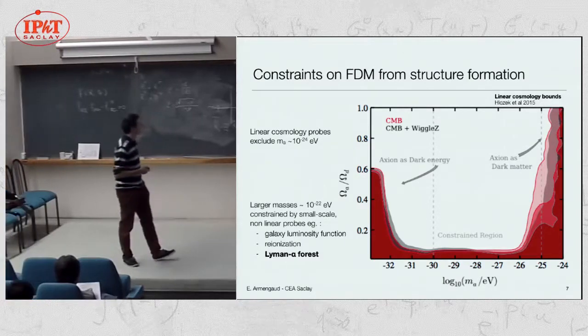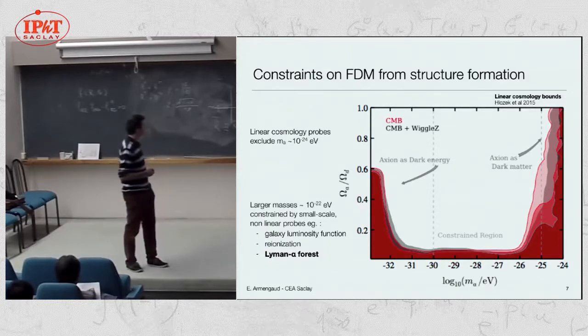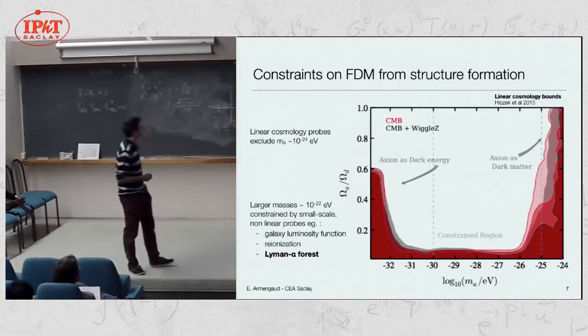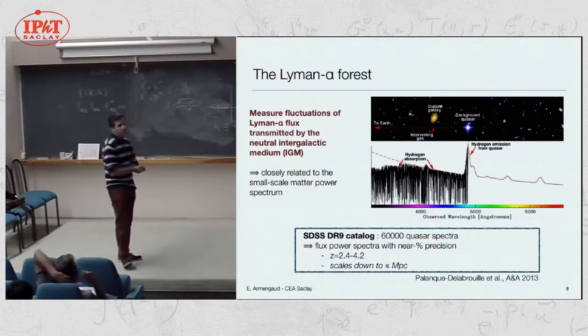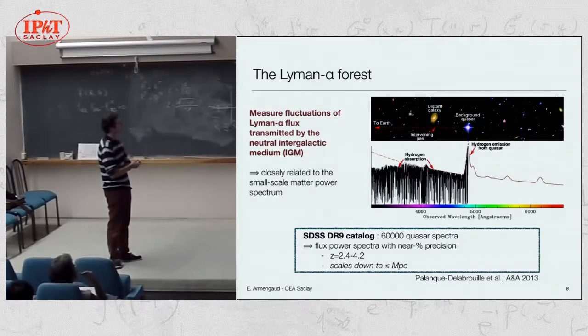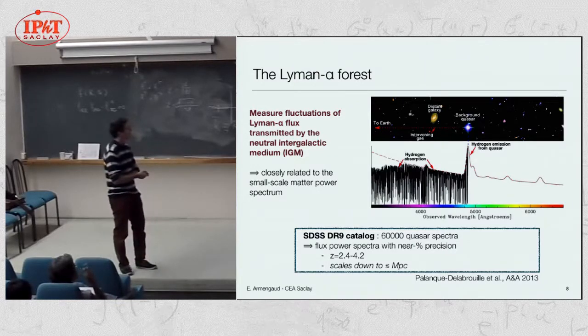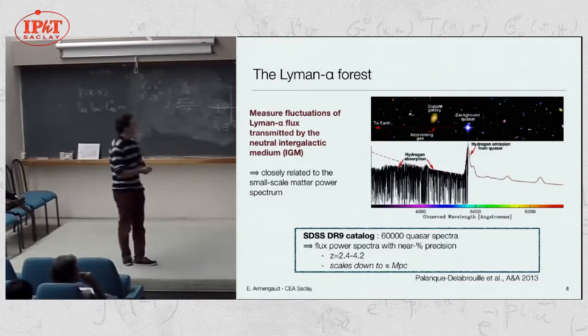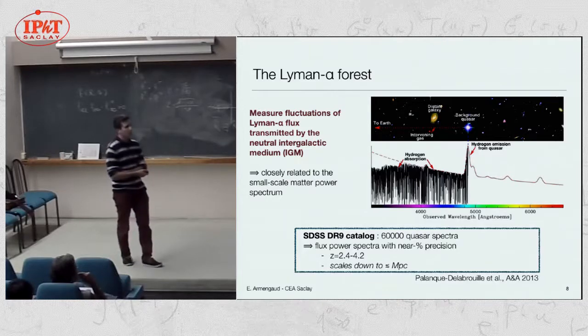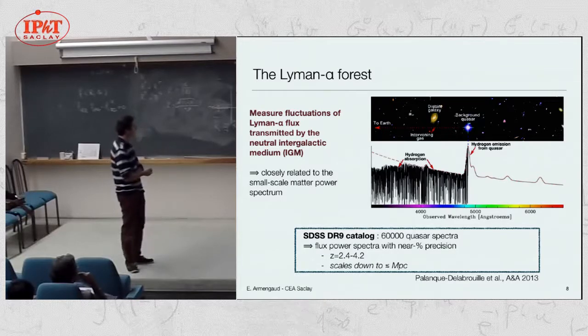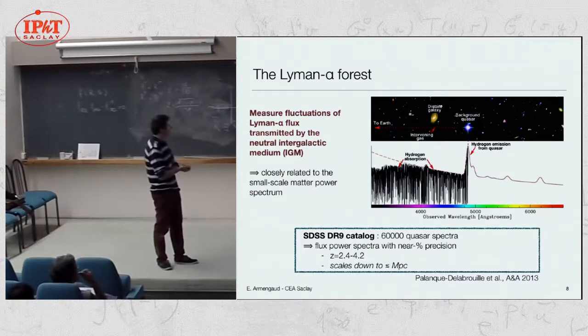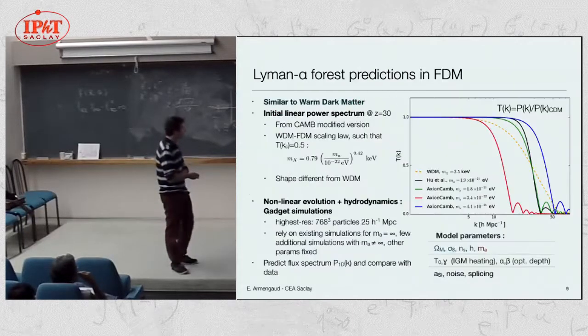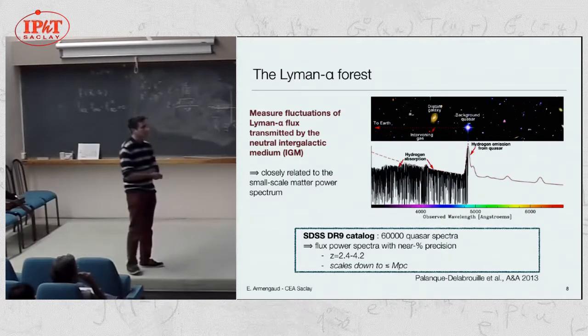To probe smaller dark matter masses down to 10 to the minus 22, we need probes that go to smaller scales in the structure. So non-linear and more dirty probes like galaxy luminosity functions, re-ionization. I'm going to focus as an example on the Lyman-Alpha forest, which is the work that we've done and on which we are specialized here at Saclay. Lyman-Alpha forest is, you measure the spectrum from a quasar and you measure an absorption spectrum. As the light passes from the quasar to the observer, it is absorbed by the intergalactic medium, and you have a set of lines due to redshift effects.